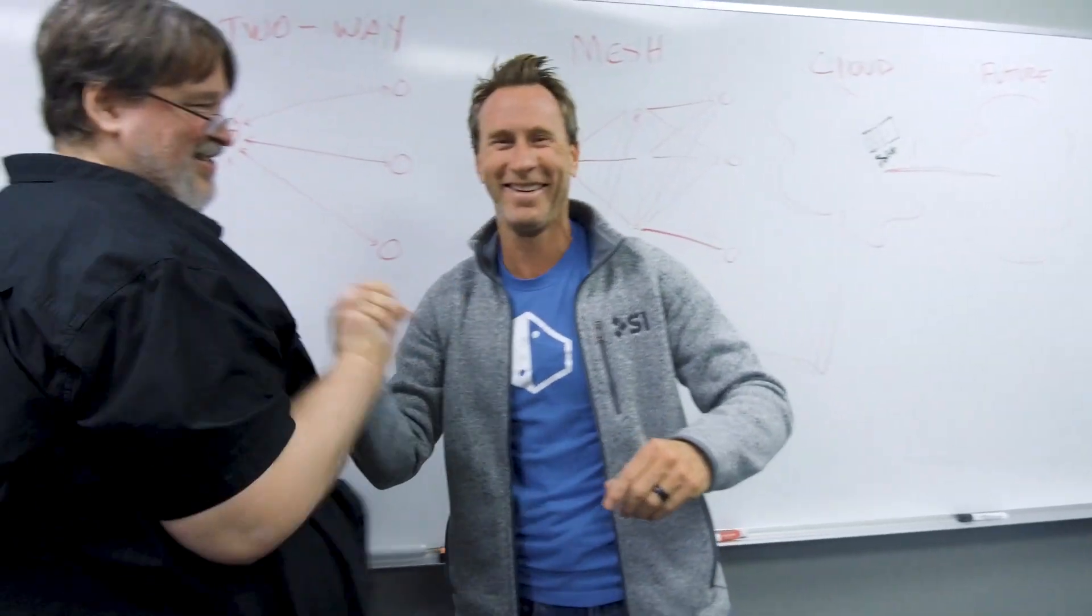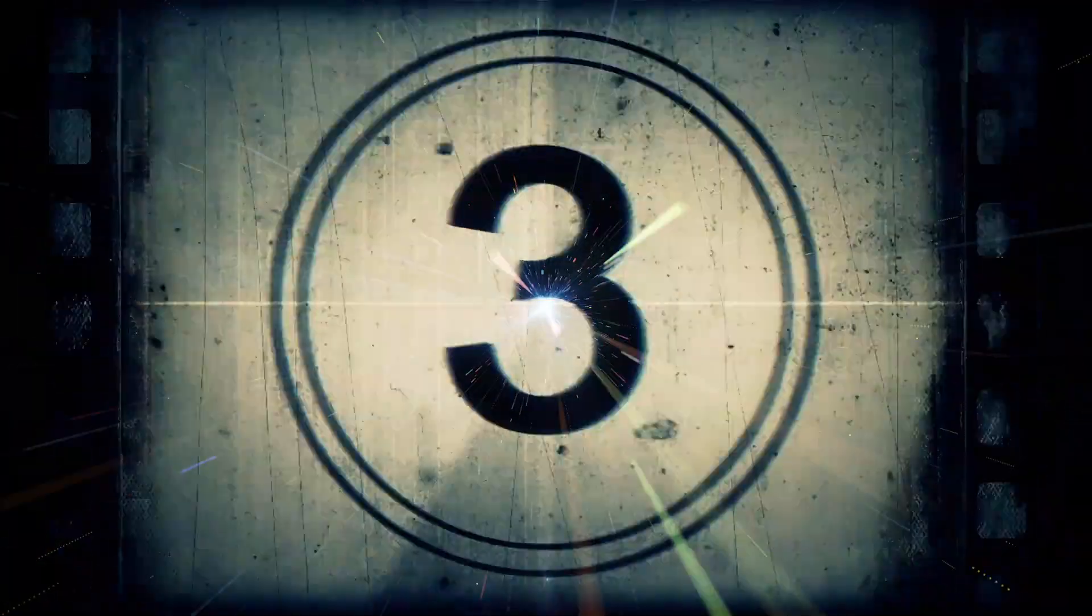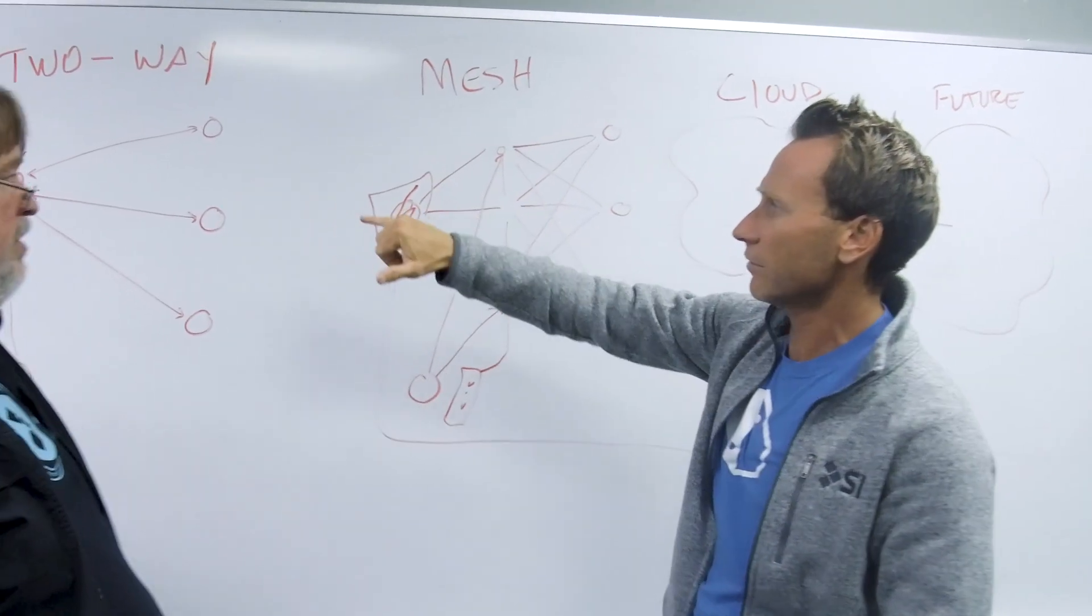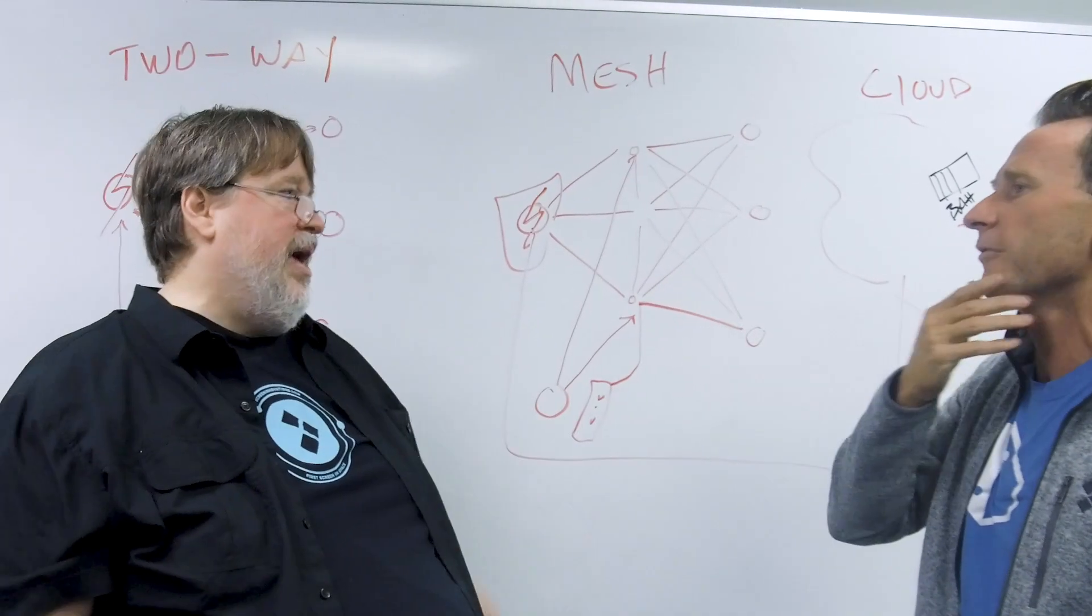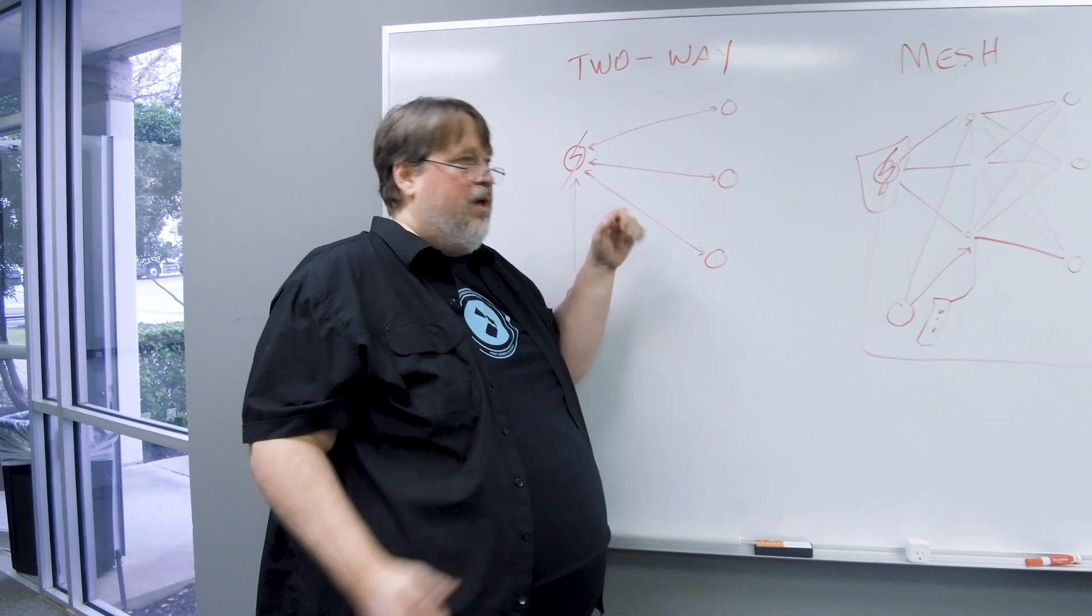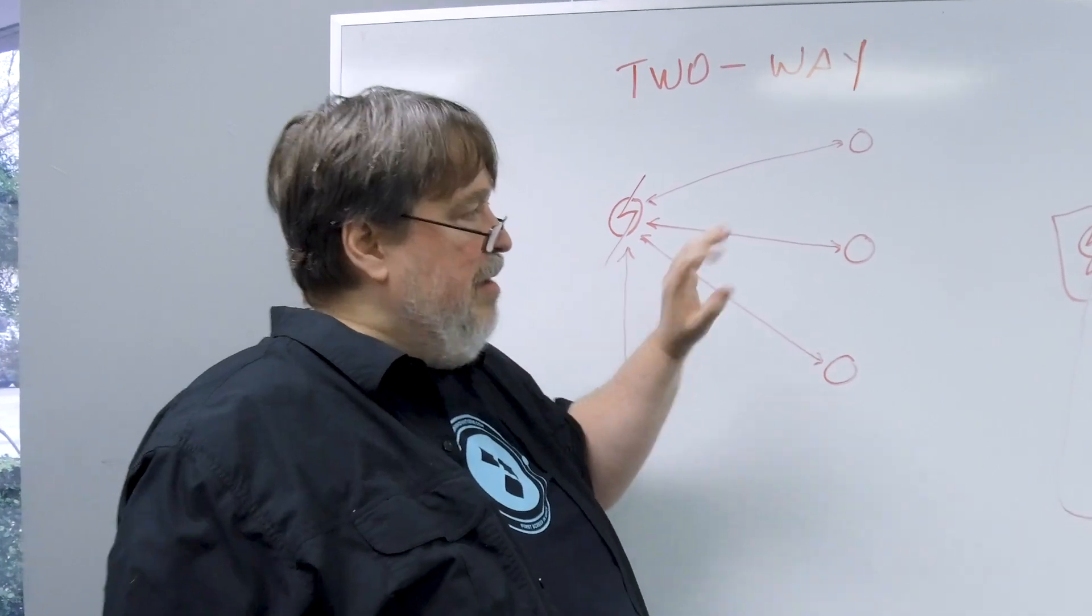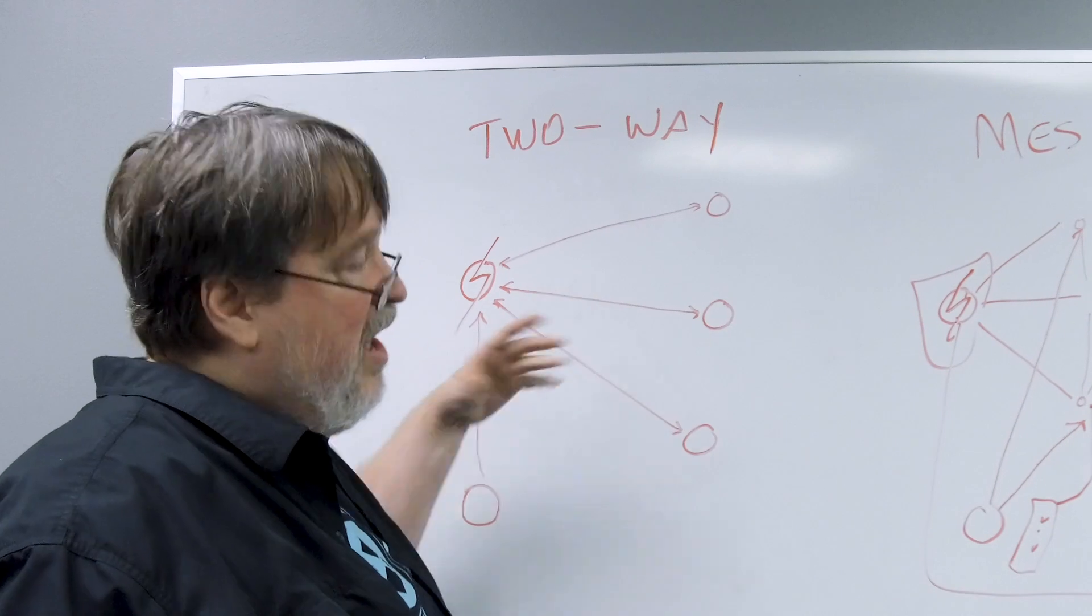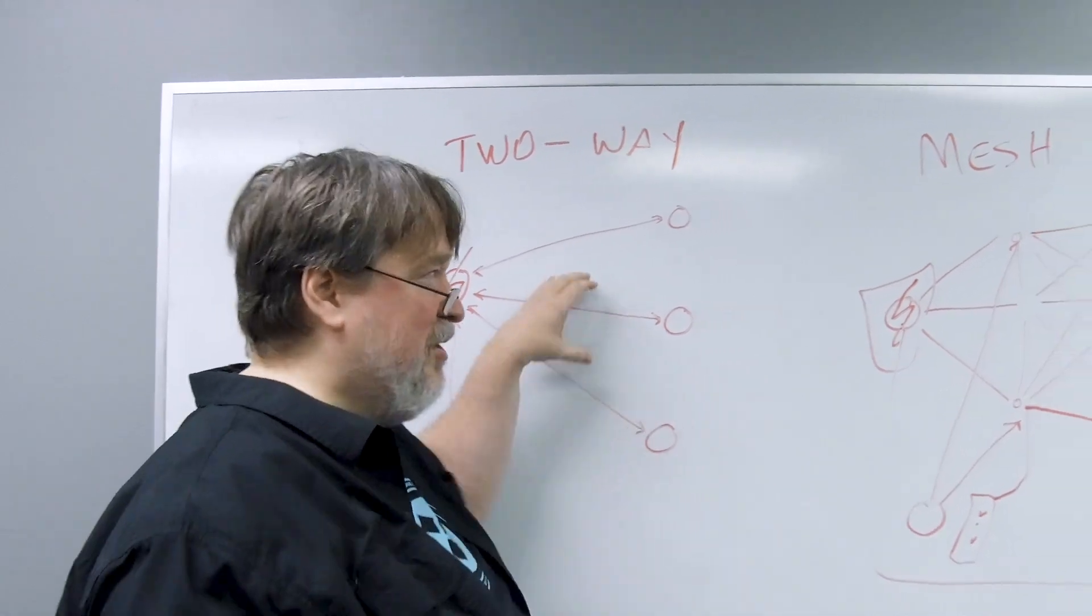Michael, can you explain the security level that we have with the mesh network versus like a two-way or an old system? Absolutely. On a system like this there's really no encryption. That means this is easily hacked if somebody really wanted to. In fact, with just a garage door opener, there's some really simple stuff you can do here.